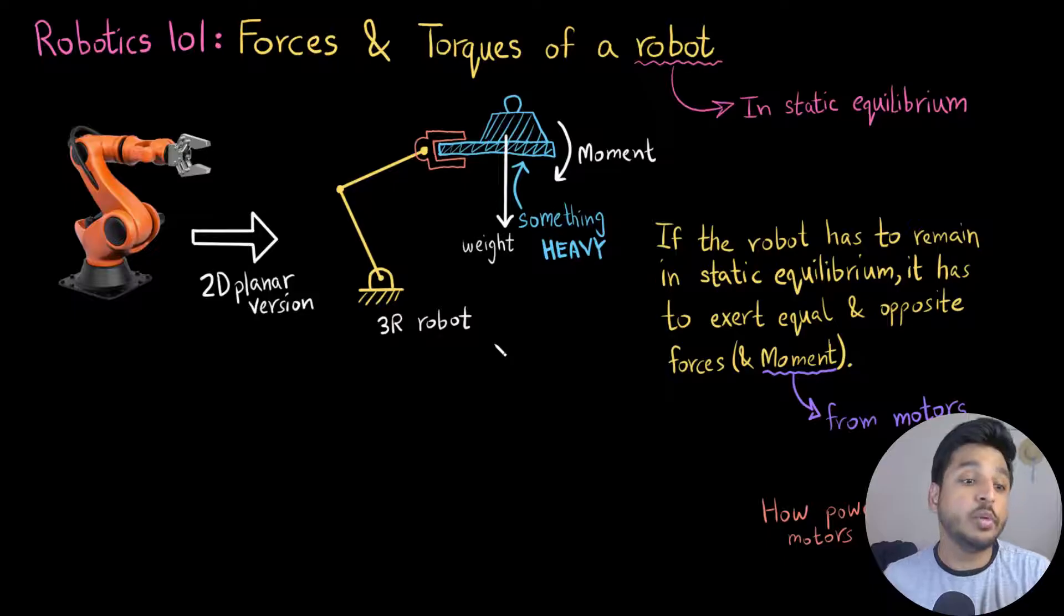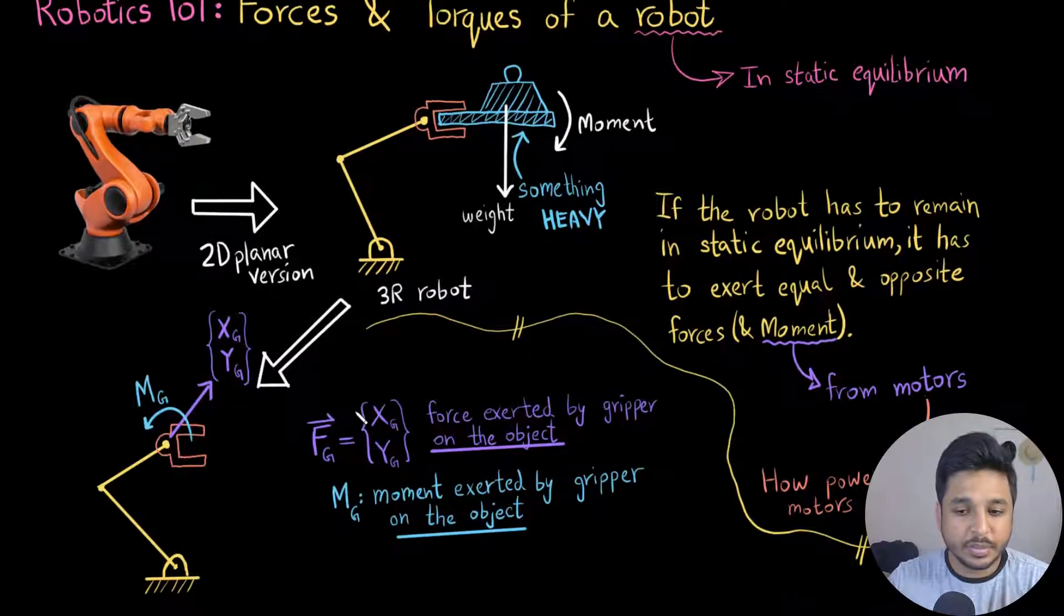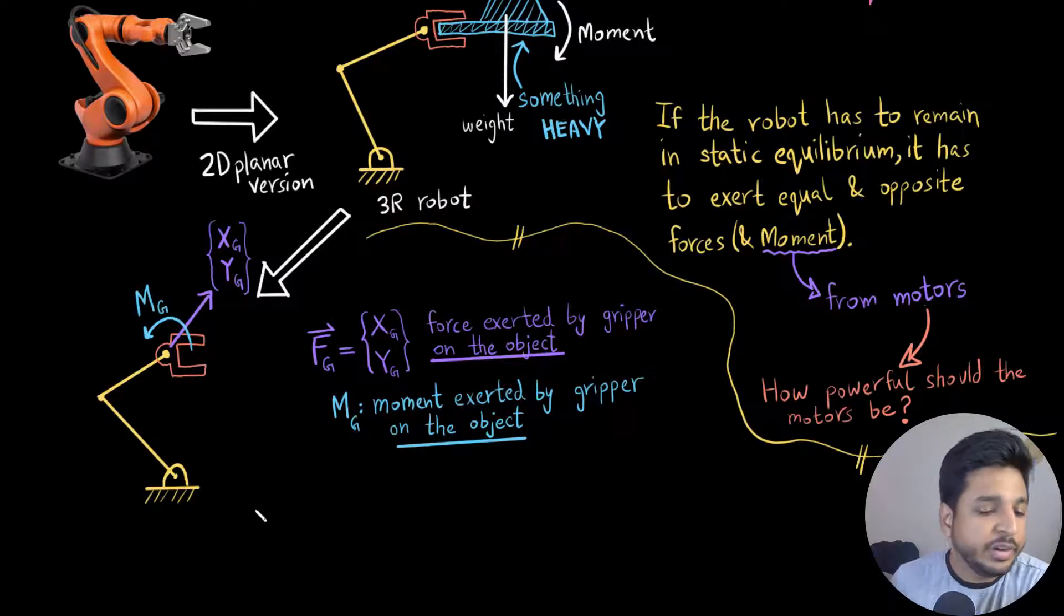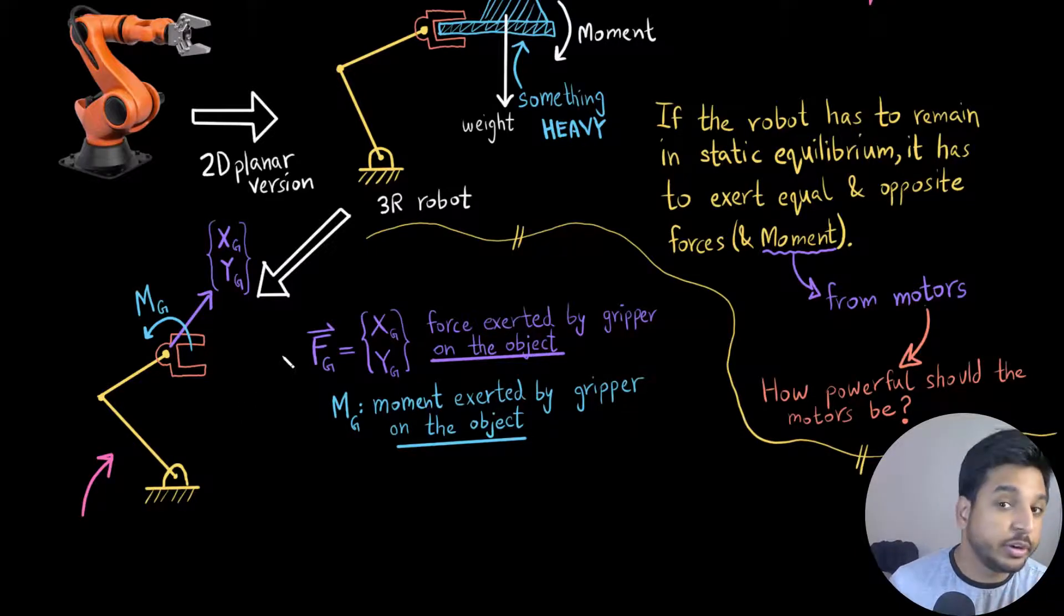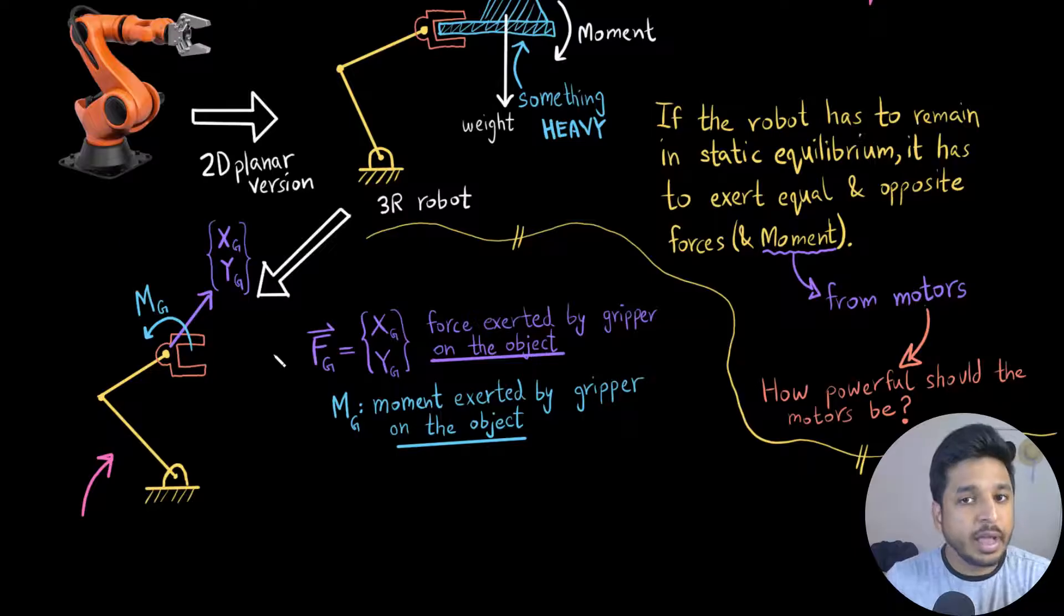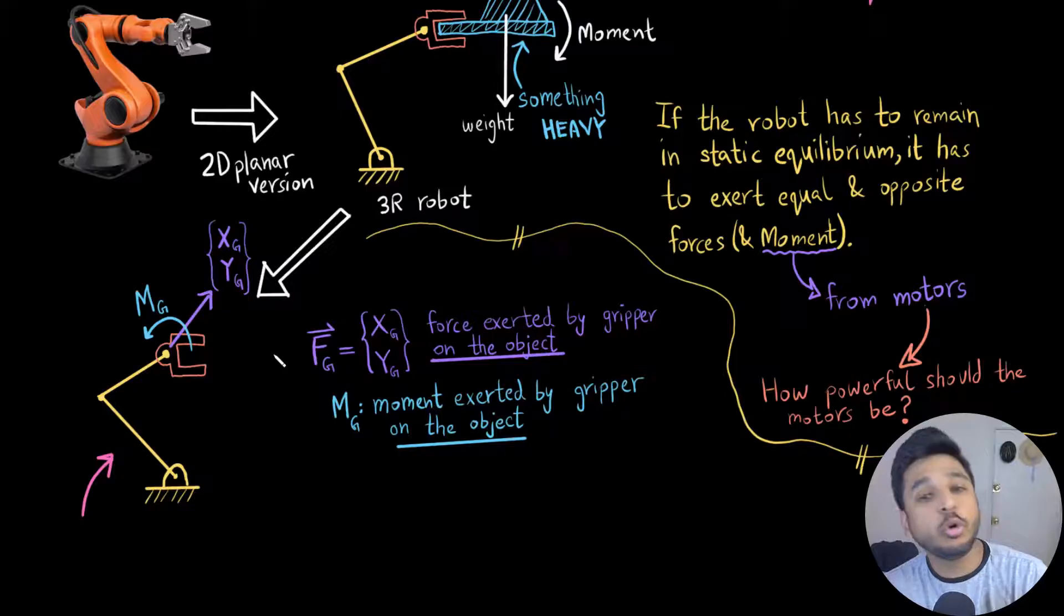Now coming to how do we actually do it. So here I have redrawn this robot on the left, right here. And instead of showing the object, what I have done is I have removed the object from the picture, but I have drawn the forces associated with it. Now notice that I have not drawn the forces that the object exerted on the robot. In fact, I have drawn the forces exerted by the robot, by the end effector of the robot on the object.